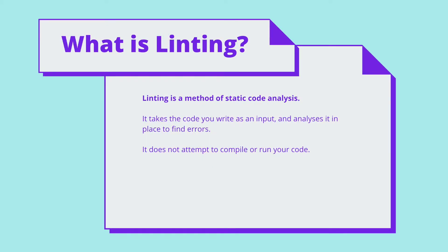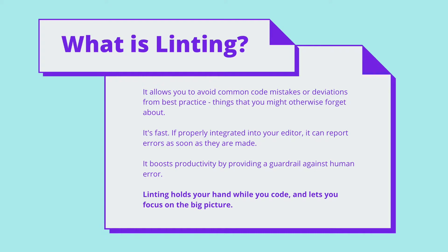So what is linting? Putting it simply, linting is a method for finding errors in your code. It's a variant of something we call static code analysis, which means that it takes the code you write as an input and analyzes it in place. It doesn't attempt to compile your code or run it — it just looks at the text of your code to find common mistakes.